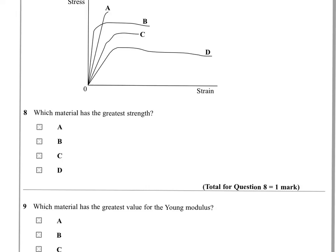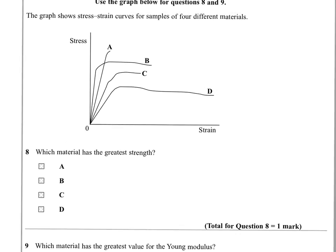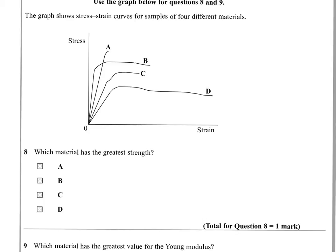OK, so which material here in this graph of stress over strain is the material that has the greatest strength? Remember that strength is sort of generally referring to the ability of something to withstand stress before it breaks. And you can see that the highest stress values are achieved by A. So we can put down A as being the strongest of those materials.